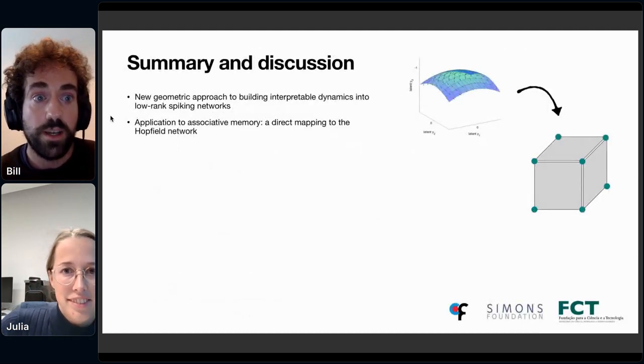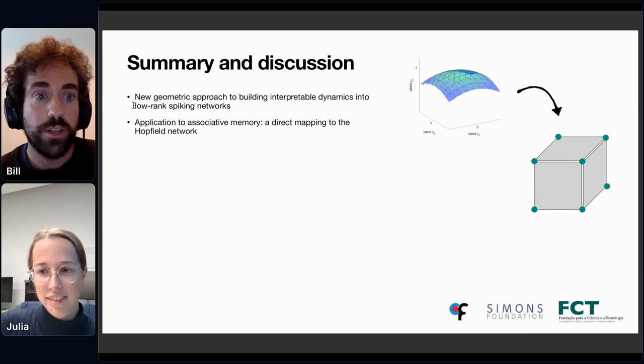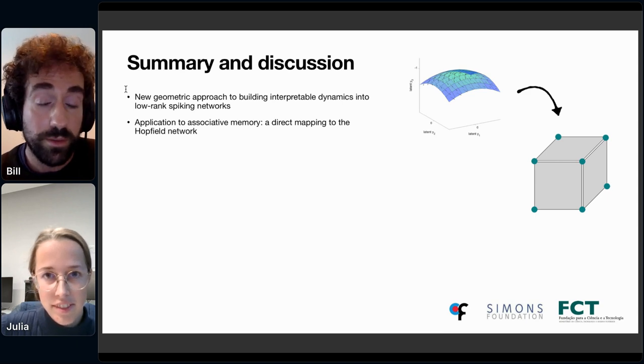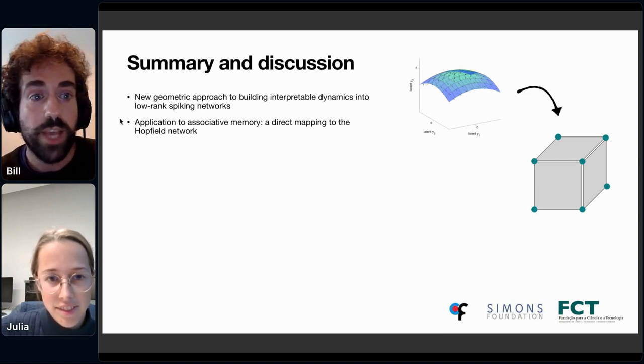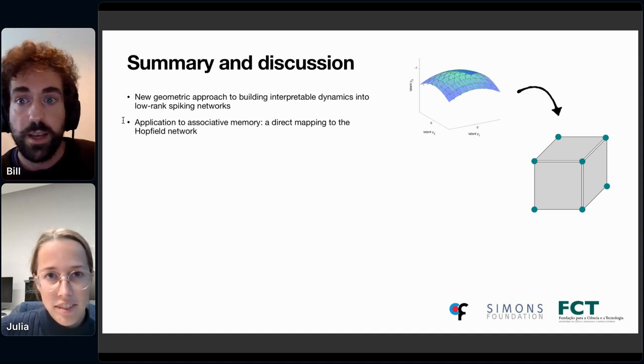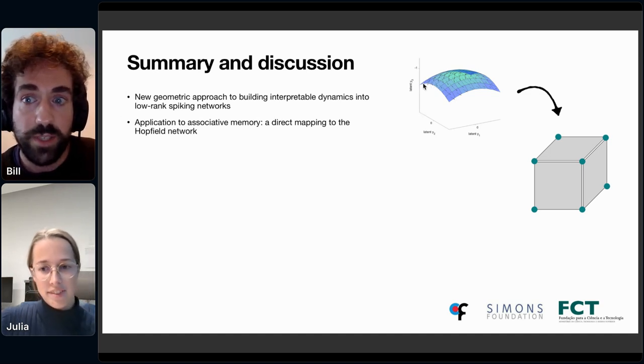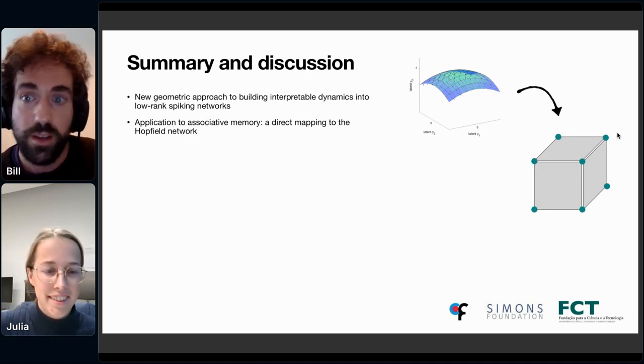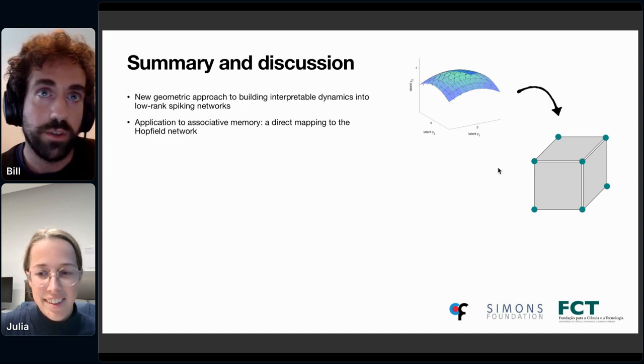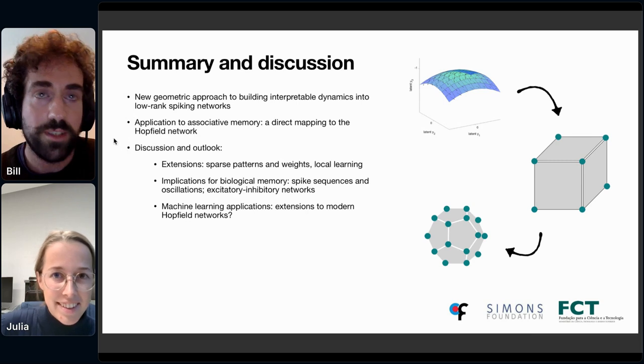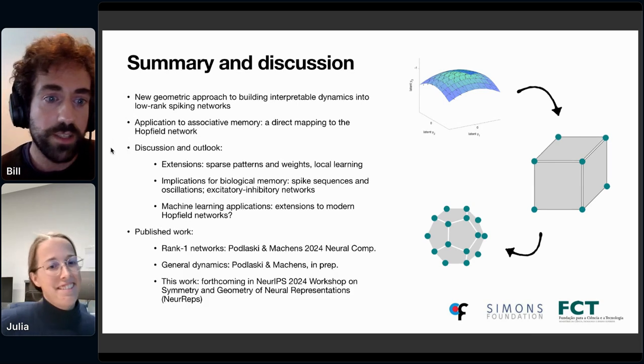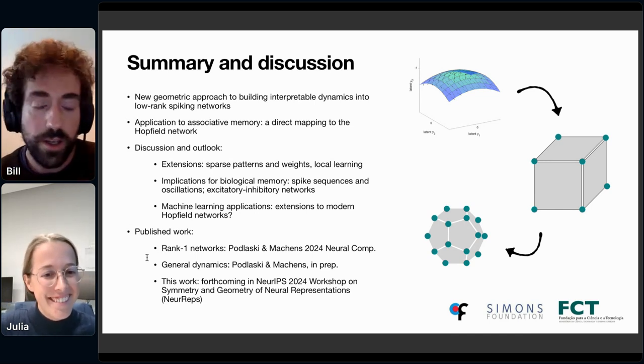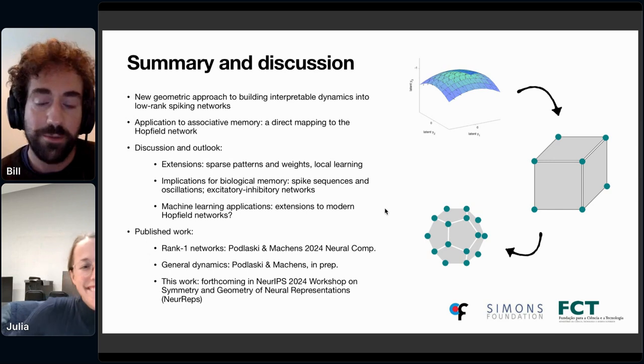With that, I'll finish. What I've shown you here is an application of this geometric approach to building interpretable dynamics into low rank spiking networks. It allows us to have a direct mapping to the Hopfield network. Essentially, what we've done is we've designed a manifold where we can store attractors on the vertices of this hypercubic manifold, and then we can think about how to get the dynamics to move towards the vertices. There's a bunch of discussion points that I think I'll skip for the sake of time. Yeah, I think we should be asking questions. There's only like two minutes left. Thanks for your presentation. Yeah, I'll finish there. Thank you.